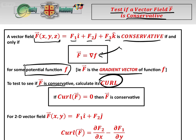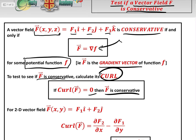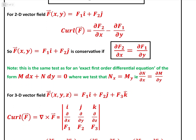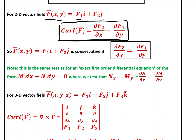If the curl is zero, then it's conservative — nice and simple. For 2D vector fields, a vector field f(x, y) which is f1·i + f2·j, the curl is defined as the partial derivative of f2 with respect to x minus the partial derivative of f1 with respect to y. If that is zero, i.e. if df2/dx equals df1/dy, then we know that the vector field is conservative.